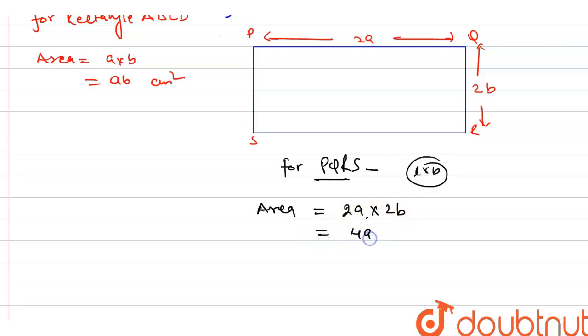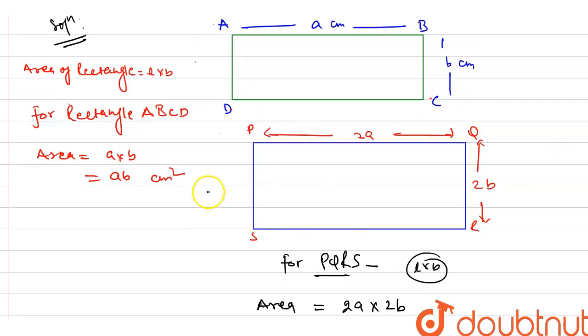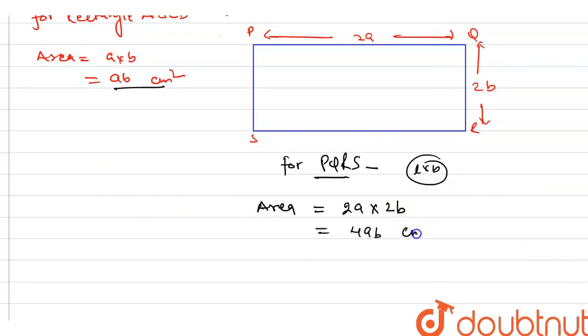2 times 2 is 4, and A into B. So, 4AB. When we will compare this, this is area of PQRS. First area is AB centimeter square and second area is 4AB centimeter square, means how many times it is more. If we have to find, we can say this is A2 and this is A1.